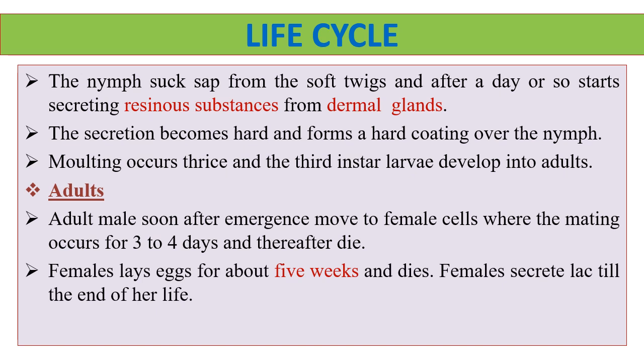Moulting occurs thrice and the third instar larvae develop into adults. The adult male, soon after emergence, moves to female cells, where mating occurs for about 3 to 4 days, and thereafter it dies. The female lays eggs for about 5 weeks and then dies. The female secretes lac till the end of her life.